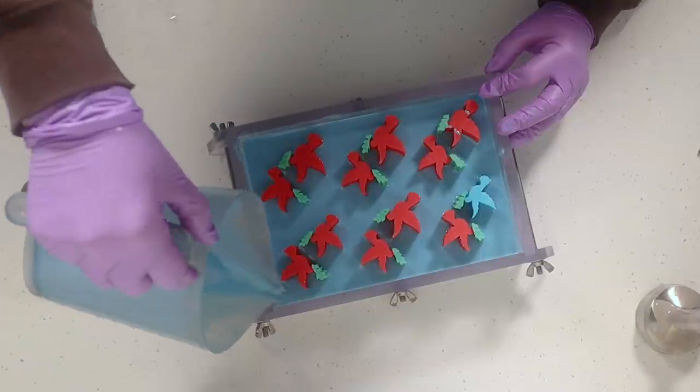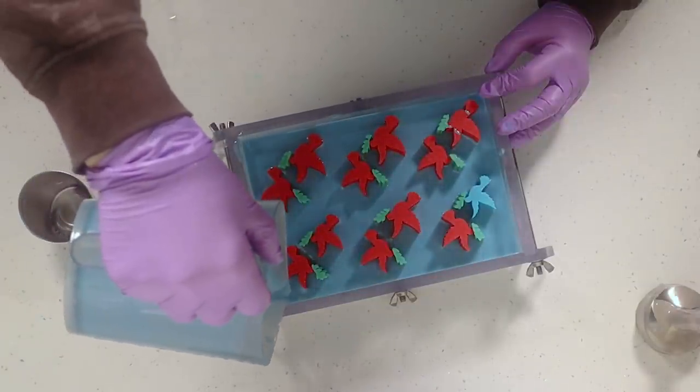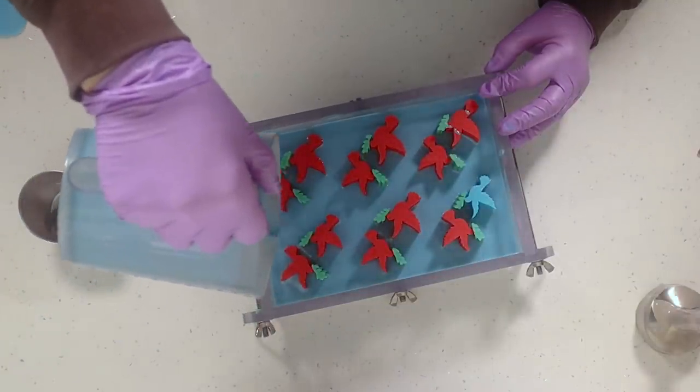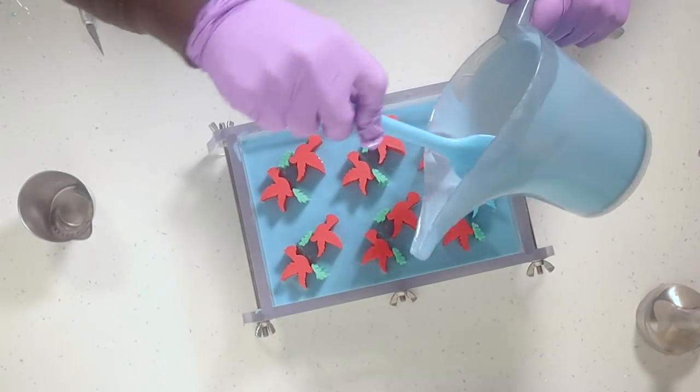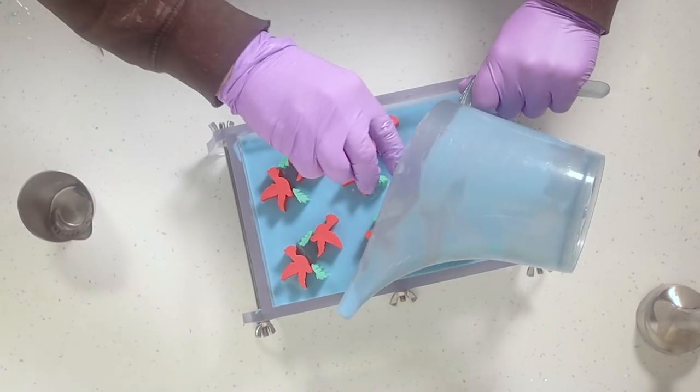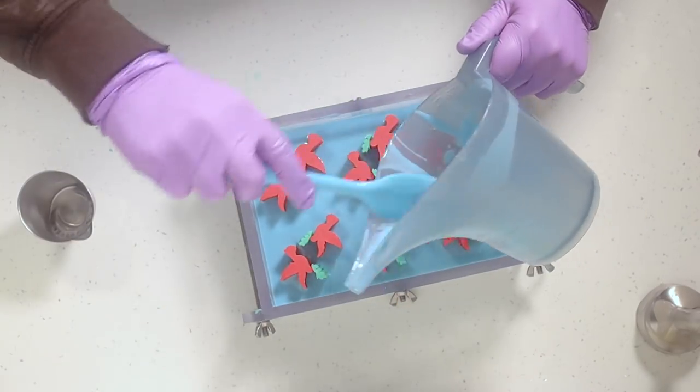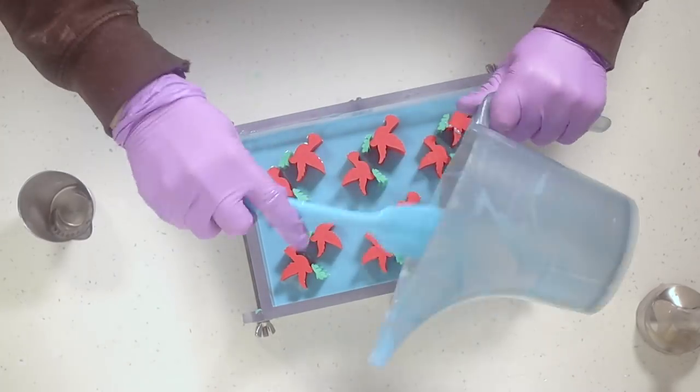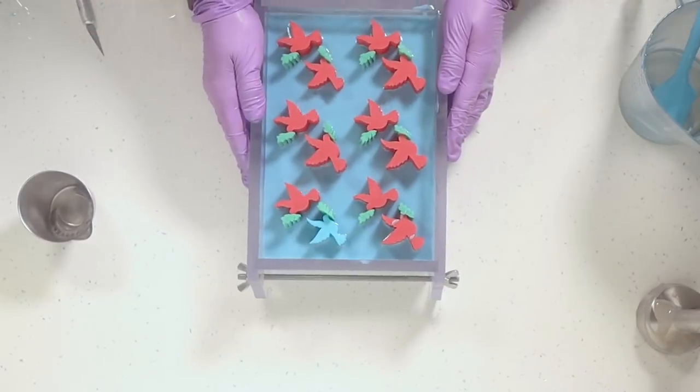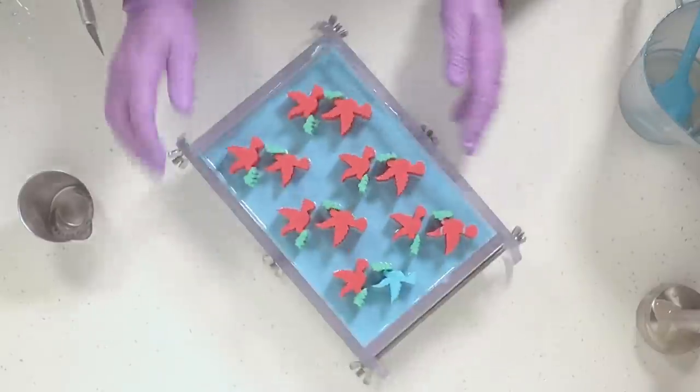Once I've got my soap in, I'm just going to give it a jiggle—not too hard because I don't want to dislodge those doves, but I do want to make sure that I've got a nice even layer all across my mold.